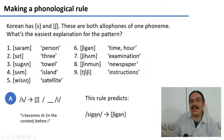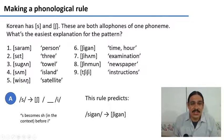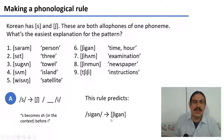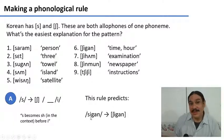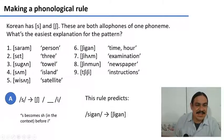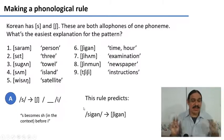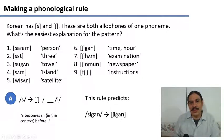This rule would predict that there is a kind of underlying form — an underlying representation of the word Shigan — which actually looks like Sigan. The S would be the base form of the phoneme, and then this base form would be transformed into an Esh. Why? Because the rule would look at this word and detect that there's an S followed by the sound E. This would trigger the rule, which transforms the S into the allophone Esh. So the input is Sigan, the rule transforms the S into an Esh, and then you get the output Shigan, meaning 'time' or 'hour.' This would be an underlying representation of the word, and you would get a surface form after the application of the rule.